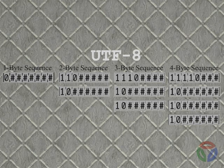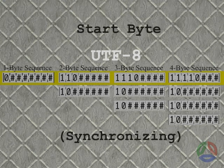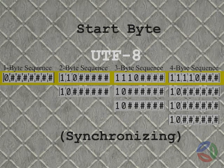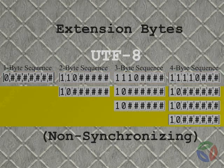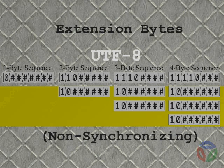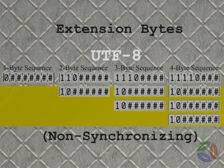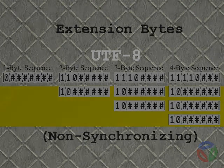Because of this, the start byte of each sequence shown at the top of each column is considered to be synchronizing. Single-bit errors will limit corruption to the character that is being encoded and possibly the one that follows. All extension bytes appearing in sequences of 2 or more bytes begin with the same bit pattern, 1-0. Because these codes do not uniquely identify any position within a sequence, they are not synchronizing bytes.